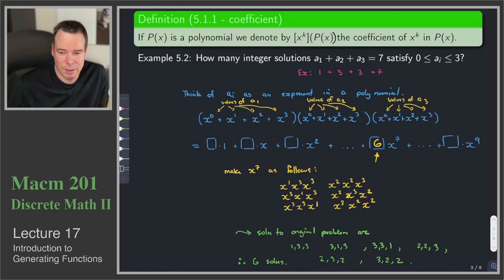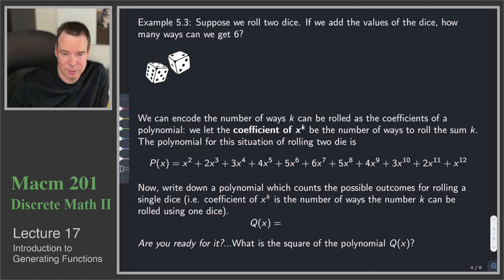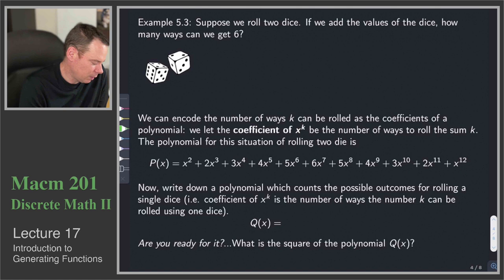Let's look at another example. Suppose we roll two dice and add the values. How many ways can we get six? We already know how to do this: we can get (1,5), (2,4), (3,3), (4,2), or (5,1) — so there are five ways. This is equivalent to finding the number of solutions to r1 + r2 = 6, where each rᵢ is between 1 and 6.